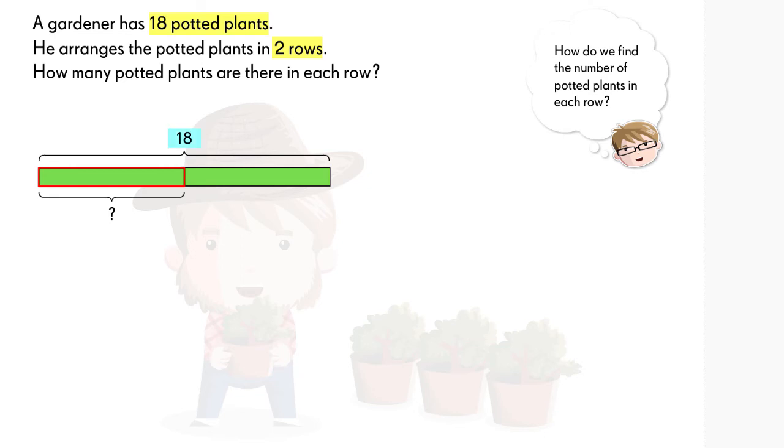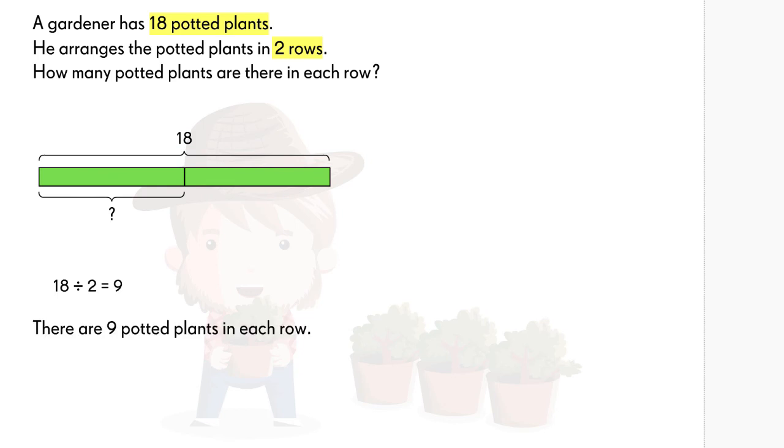There are 18 potted plants in two rows. So we divide 18 by 2. We get 9. Therefore there are 9 potted plants in each row.